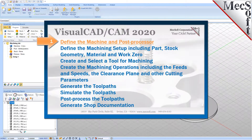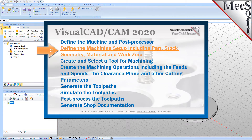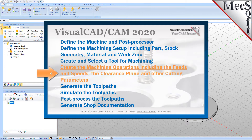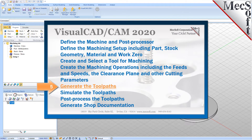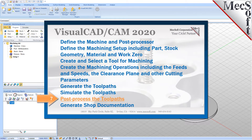We will perform the following basic steps in machining this model. First, we will define the machine and the post processor to use. Then, we will define the machine setup, including the stock geometry, material, and work zero. Then, we will create and select a tool to use for machining. We will create the machining operations, including the feeds, speeds, the clearance planes, and other cutting parameters. Then, we will generate the toolpaths, simulate the toolpaths, post-process the toolpaths, and then generate shop documentation.